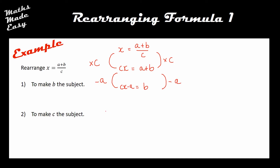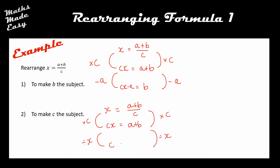In the second part, we need to make C the subject. Starting again with X equals A plus B over C. I can't do anything with A plus B directly, so my first step is the same — multiply both sides by C, giving CX equals A plus B. Now C is no longer trapped as a denominator. So I divide both sides by X to isolate C, giving C equals A plus B divided by X.